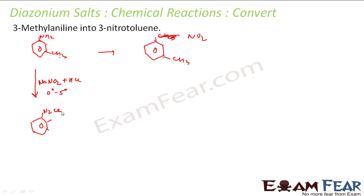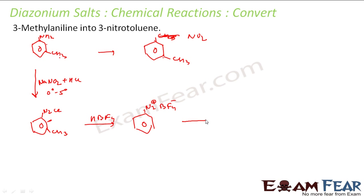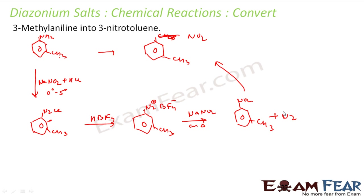This will give me N2⁺Cl⁻ with CH3. Now I have to react this with HBF4 to convert it to N2⁺BF4⁻, because this is the one that can be converted to NO2. Then react with NaNO2 in the presence of copper and heat it. What will happen is N2 will be replaced with NO2, CH3 is retained — and that is what I was looking for. In this reaction you will also get N2 gas and NaBF4 as byproducts.